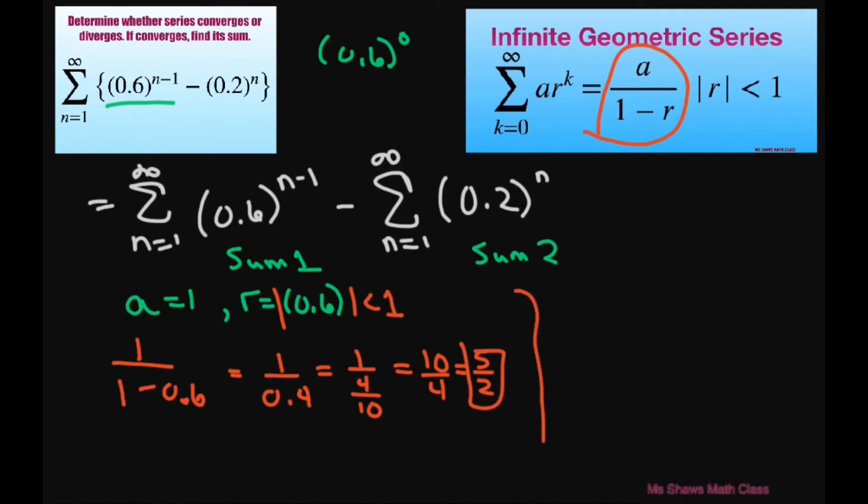Now for our second one, our first term is going to be 0.2 because if I substitute in 1 here into the n, we get that. Your common ratio is also 0.2, and the absolute value of that is less than 1.